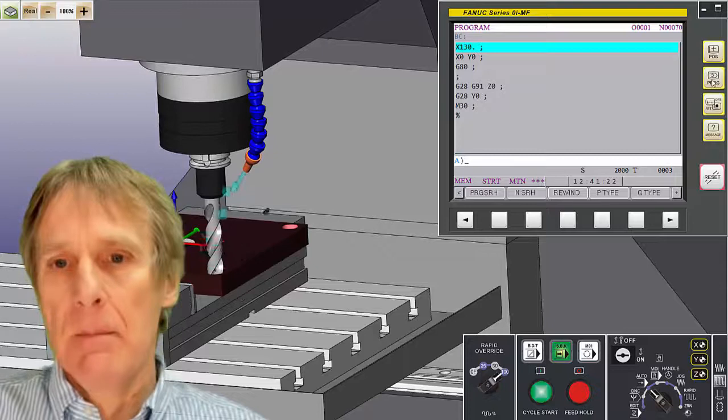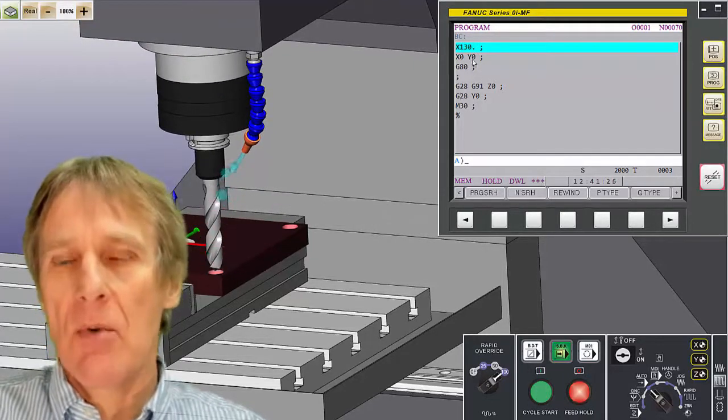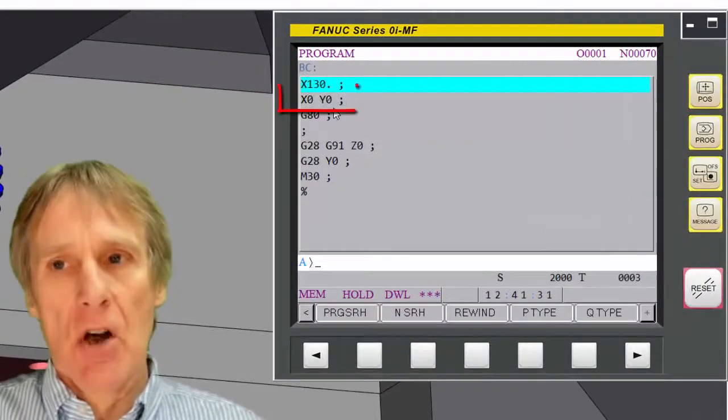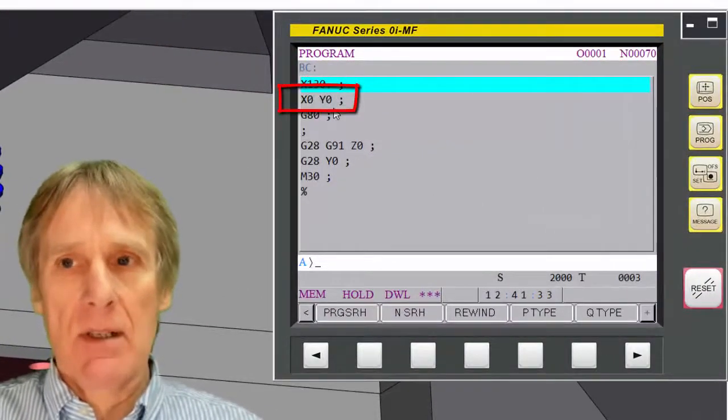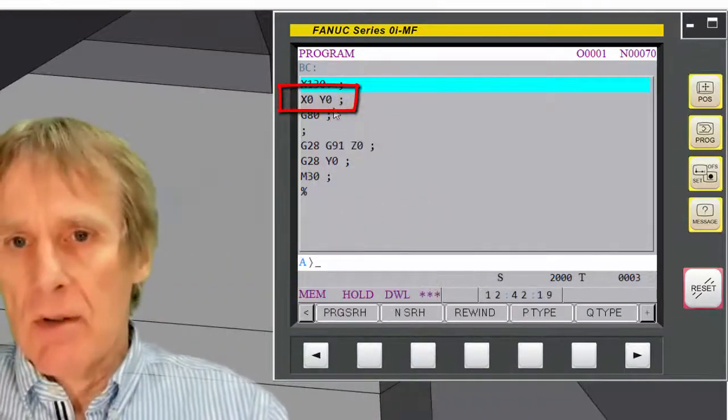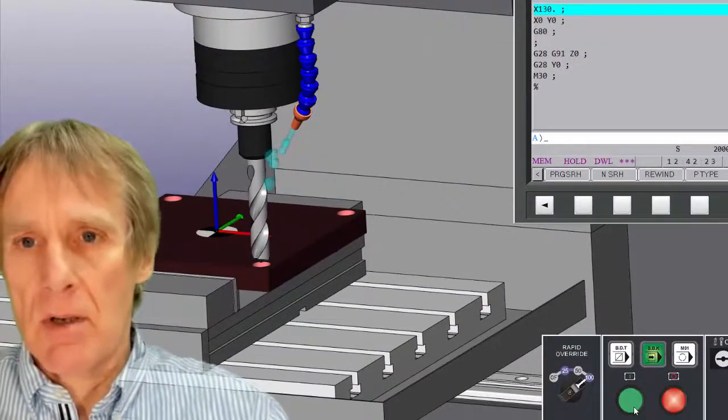And what I'm going to do then is I'm actually going to zero zero—X zero Y zero. Now X zero Y zero is my datum, so there's only one X zero Y zero, and that's what happens with absolute programming. So what I'm going to do now is move to zero zero, X zero Y zero, so I'll go to the middle of my component. And now I'm going to drill a hole in the middle.